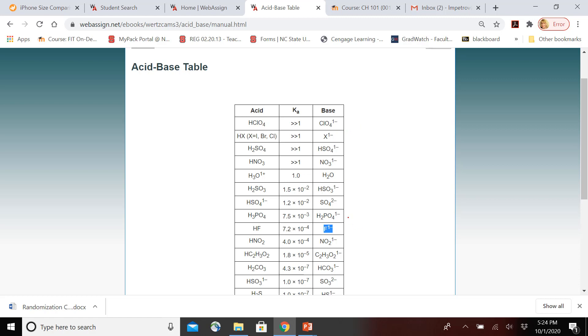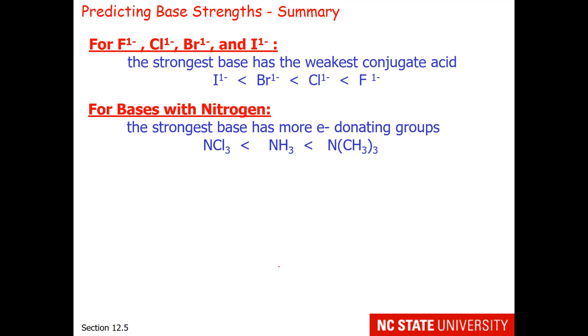If we think about the example with nitrogen that was just shown, the strongest base has more electron donating groups.